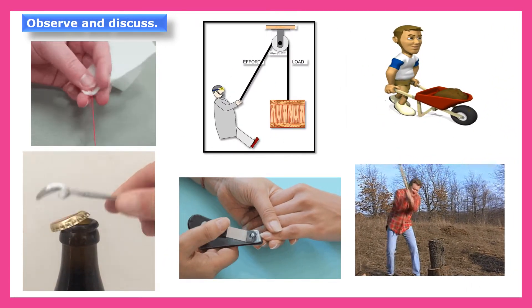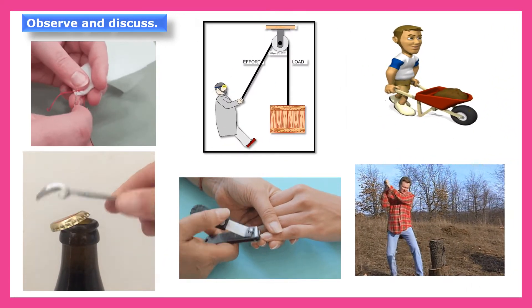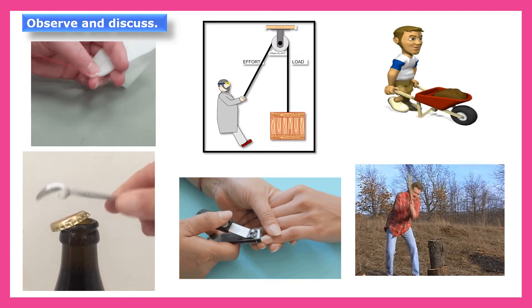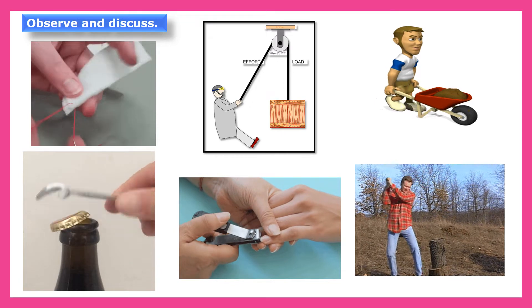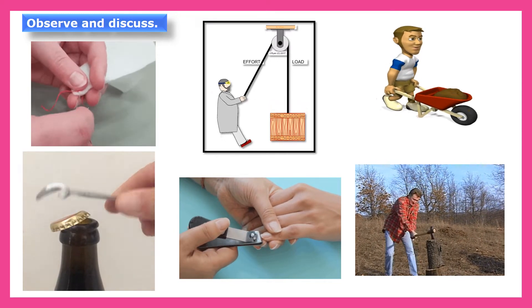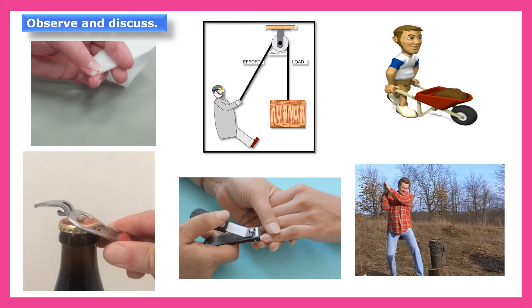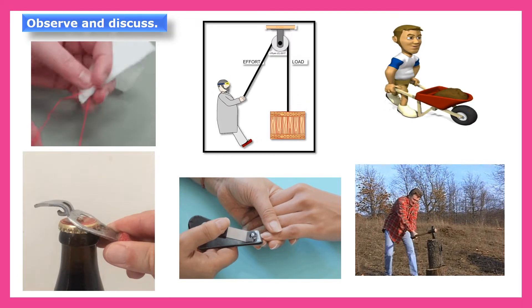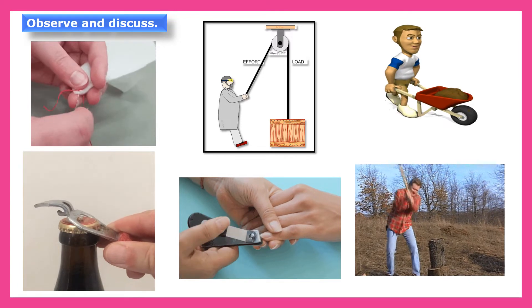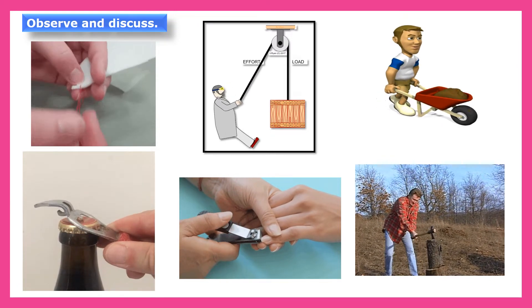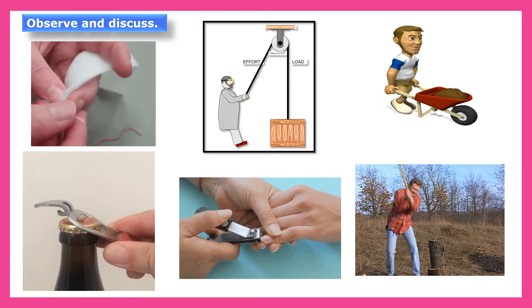Now observe and discuss. In the following pictures, certain devices are used to accomplish certain tasks more easily. Name the devices and discuss how they help. So in the above pictures, we can see needle, wheelbarrow, bottle opener, nail cutter, pulley and an axe.